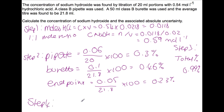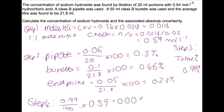Step four: to express as an absolute uncertainty, take 0.99% divided by 100 multiplied by the concentration of sodium hydroxide (0.59), giving an absolute uncertainty of 0.006. So our concentration of sodium hydroxide is 0.59 plus or minus 0.006 moles per litre. Thank you for watching. Please remember to subscribe and follow me on Twitter at MissAdamsChem and on Instagram, MissAdamsChemistry.